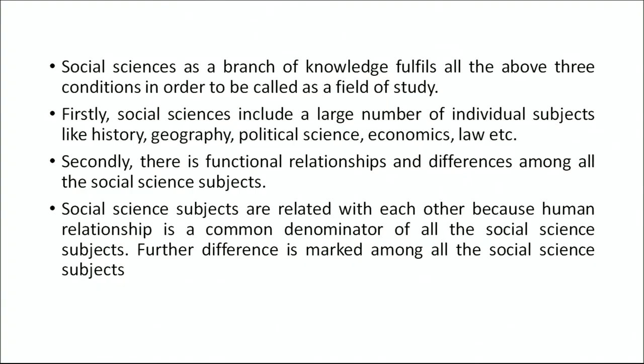The third condition is that there must be functional relationships and differences among the different fields also. Subjects under a field of study should be related and different, and at the same time different fields must also have certain relationships and differences. These three conditions are very essential for a particular area to be called a field of study. Social science as a branch of knowledge fulfills all the above three conditions, which is why we call social science a field of study.